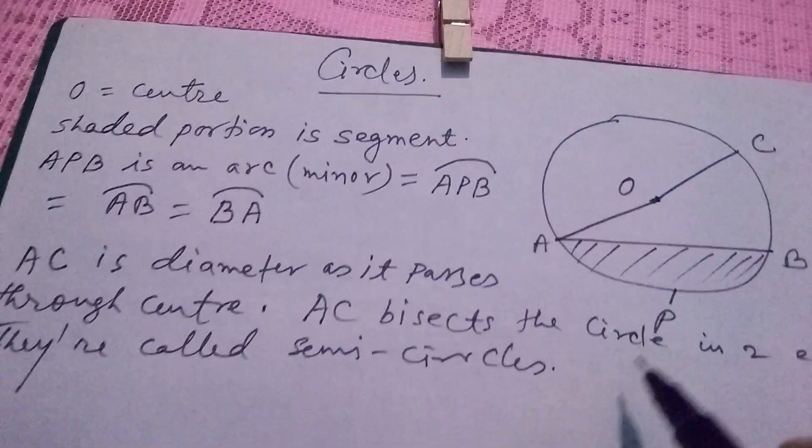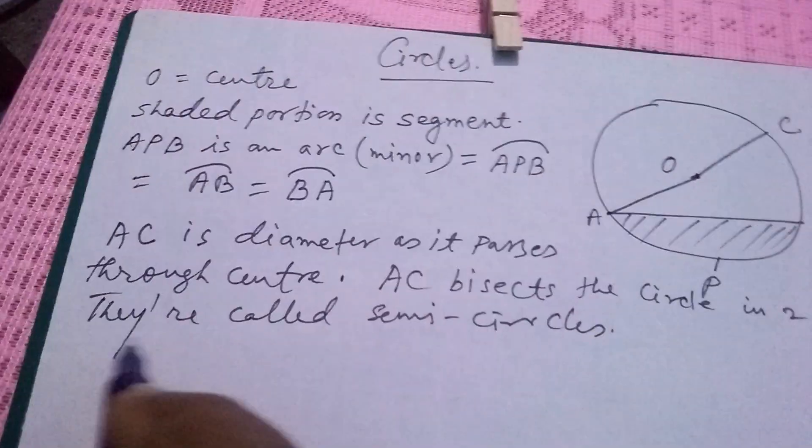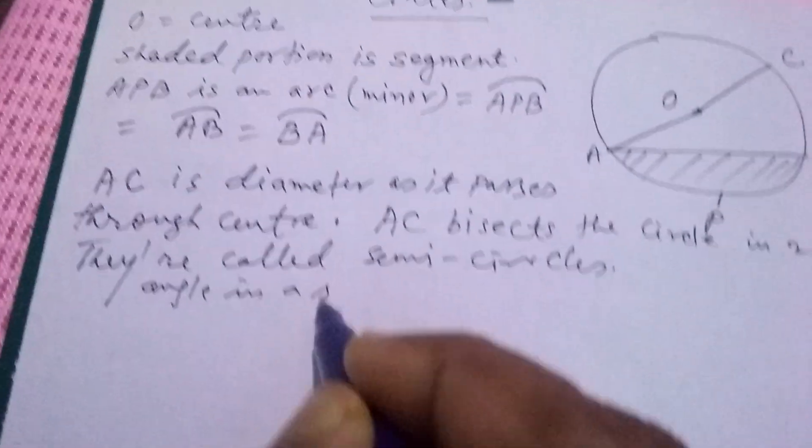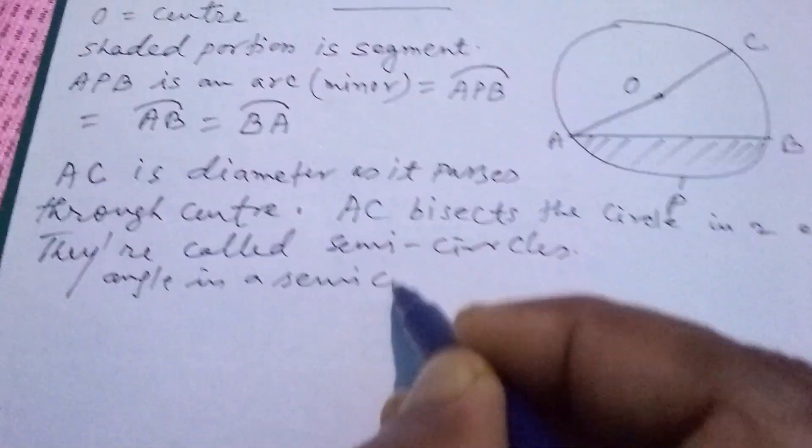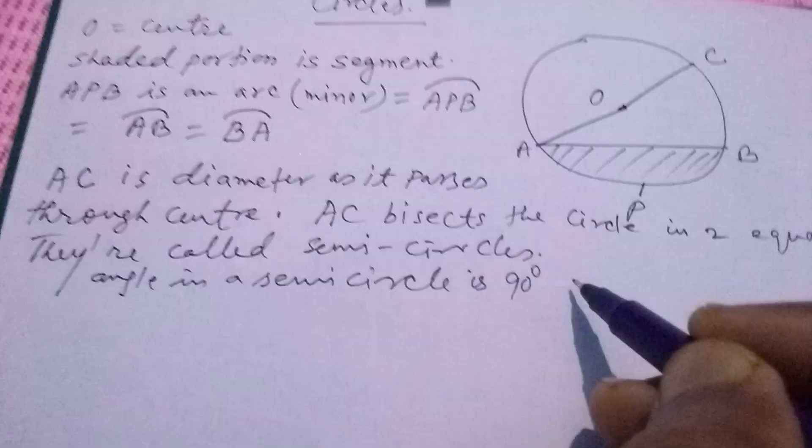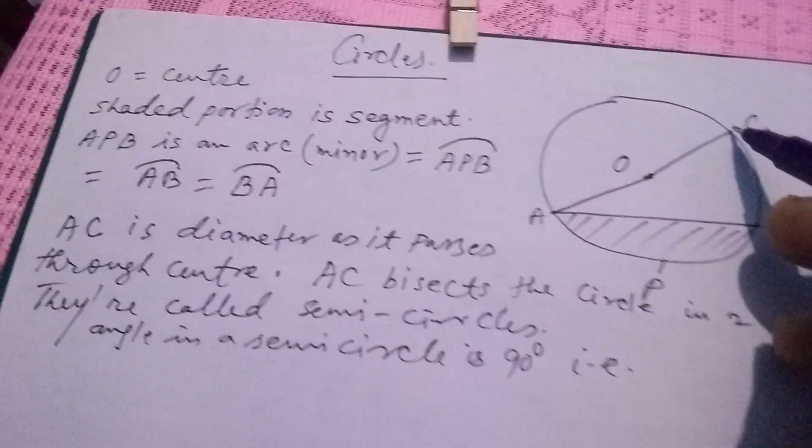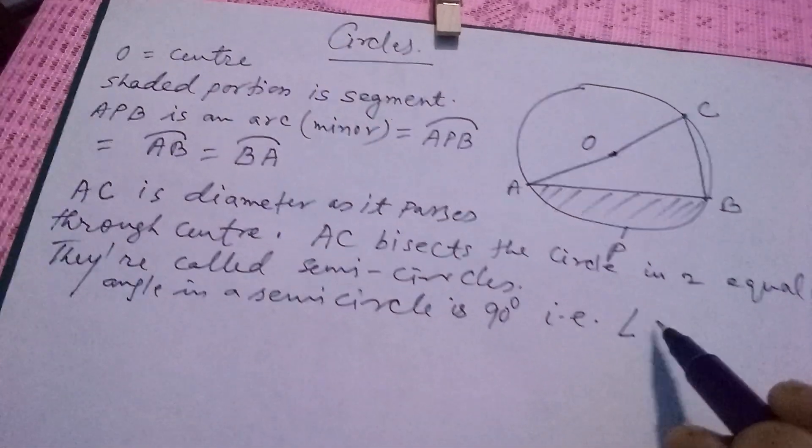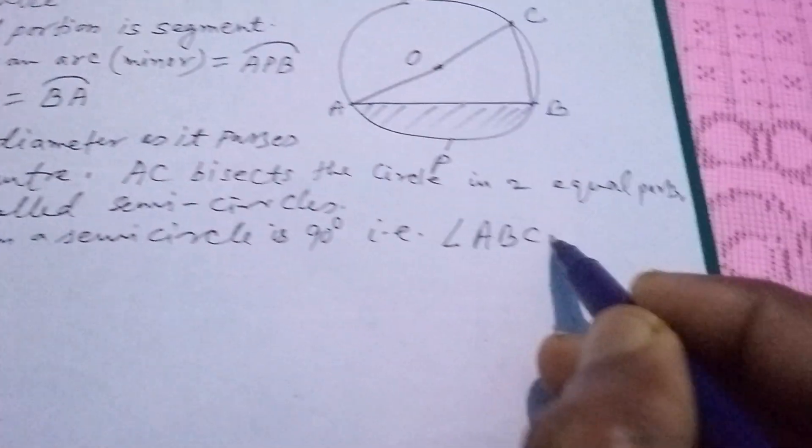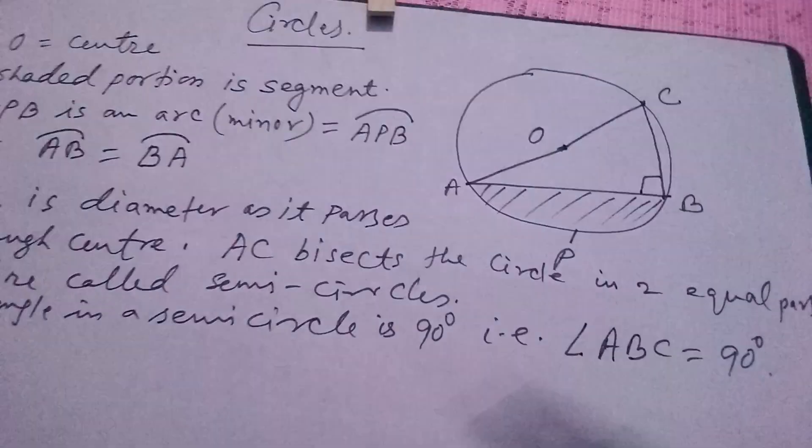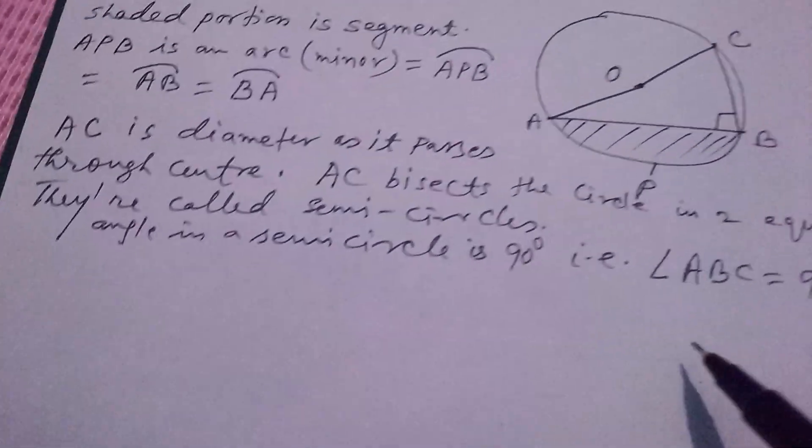Always you have to keep in mind, angle in a semi-circle is 90 degrees. That means, if you join to B, then angle ABC equals to 90 degrees. This is called angle in the semi-circle.